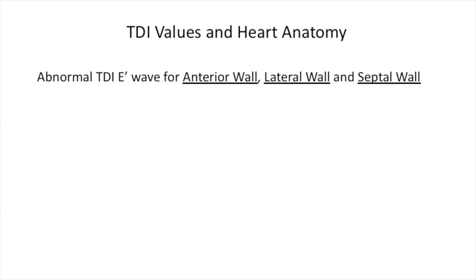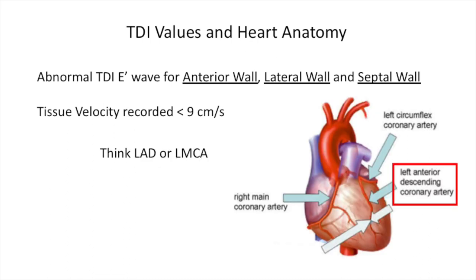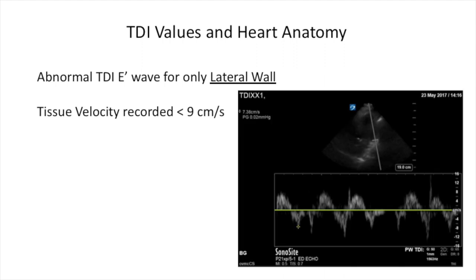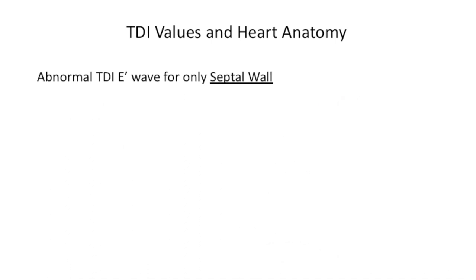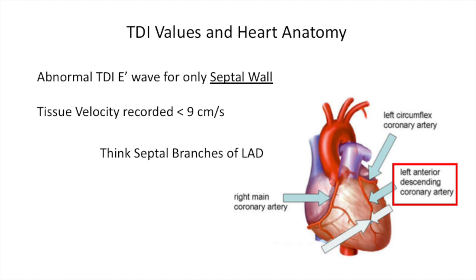Abnormal E-prime waves for a particular wall are related to diastolic dysfunction and ischemia in relation to the heart's vasculature. For example, if a patient comes in and you measure abnormal values for the septal, lateral, and anterior walls — meaning less than 9 cm/s for lateral and anterior, and less than 7 cm/s for the septal wall — you would want to consider a potential pathology involving the left anterior descending or left coronary artery, since they are involved in the blood supply to those three walls. If another patient has abnormal tissue measurements for only the lateral wall, then you would consider the left circumflex artery being affected. If only the septal wall is abnormal on TDI, then you'd consider the left anterior descending artery, more specifically the septal branches of the artery.